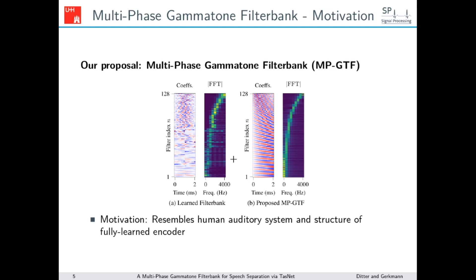Auditory filter banks like the gammatone filter bank have the property that center frequencies are distributed logarithmically on the frequency scale. A second property for our proposed filter bank is that for the same center frequency it has multiple filters with different phase shifts. This was also inspired by the learned filter bank of TASNET, where we see that in lower frequency regions there are filters that share the same center frequency but have different phase shifts. We integrated this concept into our proposed multi-phase gammatone filter bank.